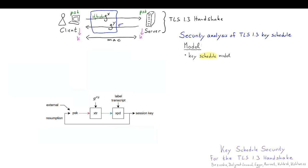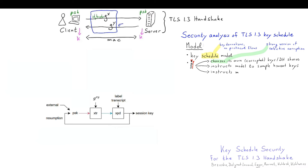In our security analysis of the TLS 1.3 key schedule, we model the key schedule—we model key derivations, not the protocol flow. The adversary chooses its own corrupted keys and Diffie-Hellman shares and can instruct the model to sample honest keys. This model is a strong version of selective corruption. Additionally, the adversary instructs the model to perform key derivations with adversarially chosen transcripts that have to satisfy some restrictions.